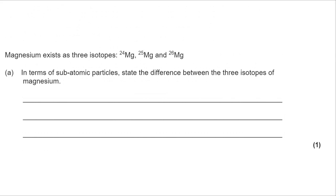Now you can't say that it's a different mass number because the question clearly states it's got to be in relation to subatomic particles. So all you need to say is that they have different numbers of neutrons. You could be specific and say they've got 12, 13, and 14 respectively, but not necessary. Either of those would get the mark.